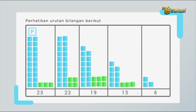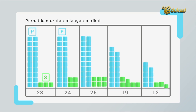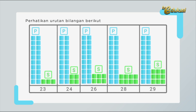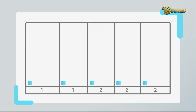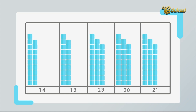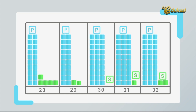Di sini ada bilangan 23, ada 2 batang dan 3 satuan. 24, 2 batang 4 satuan. 26, 2 batang 6 satuan. 28, 2 batang 8 satuan. 29, 2 batang 9 satuan. Kemudian kita lihat berikutnya, ada gambar 29, 2 batang 9 satuan.